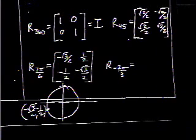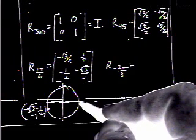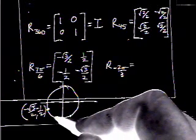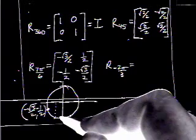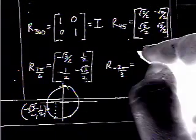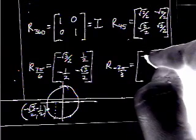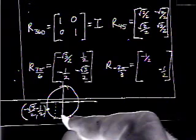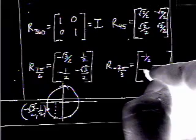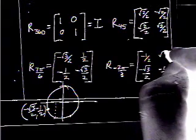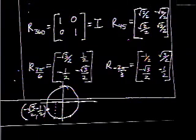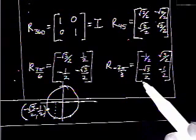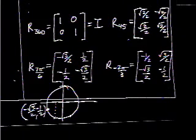What about rotation negative 2π over 3? That's at negative 2π over 3 on the unit circle, which has an x value of negative 1 half and a y value of negative radical 3 over 2, with its opposite being positive radical 3 over 2. So filling in the pattern — x, x, y, opposite y — gives us the rotation negative 2π over 3 matrix. Yes, you will need to know your unit circle.